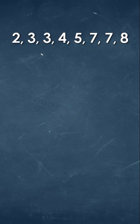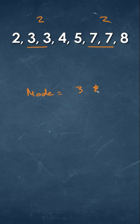You might have data sets where you're looking at two values that occur. So we see that three occurs twice and seven occurs twice. Well then we're going to have two values for our mode. We'll have three and seven.